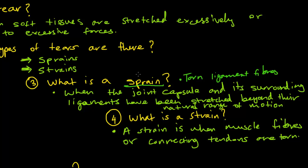You might ask, what is a strain? A strain is when muscle fibers or connecting tendons are torn. Whereas in a sprain it's the joint capsule and its surrounding ligaments which have been stretched beyond their natural range of motion, leading to a torn ligament fiber. That's the main difference.